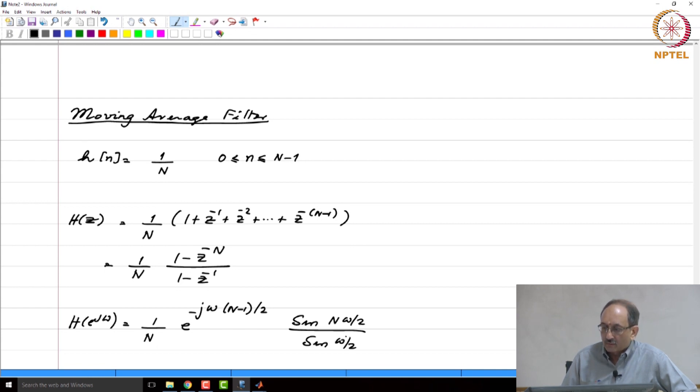And the impulse response is a constant. So this is 0, 1, 2 up to n minus 1, and the value of the constant is 1 over n.